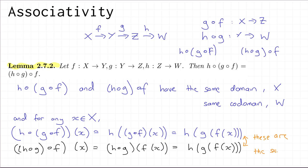Our two different compositions have the same domain, same codomain, and the same output for every input, so they are equal as functions. That is the associativity property for function composition.